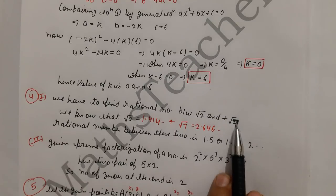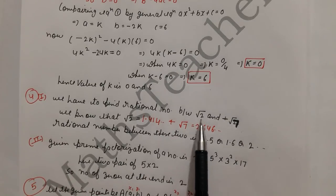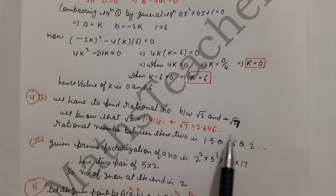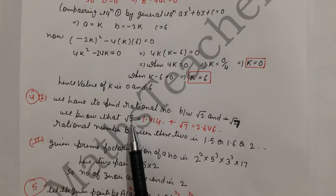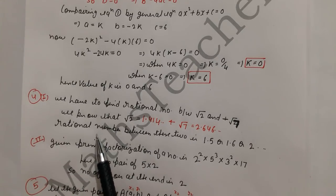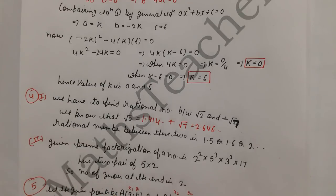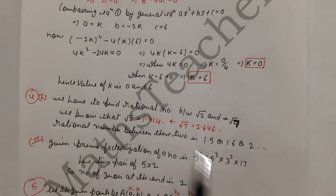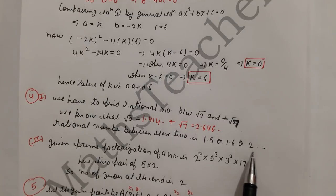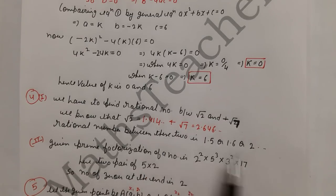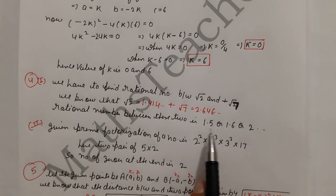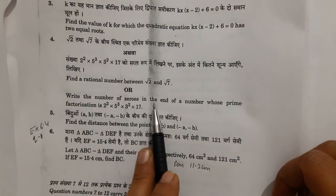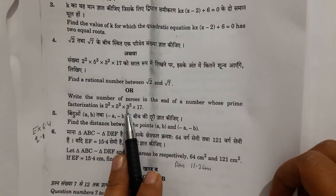√2 ≈ 1.414 and √7 ≈ 2.646. We need a number between these values. We can choose any rational number like 2 or 1.5 that falls between 1.414 and 2.646.